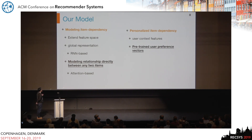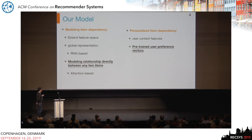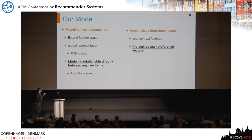For the personalized re-ranking method, there are two problems to solve: first, how to model item dependencies; and second, how to adjust mutual influences between items according to different users. We use an attention-based model to directly model the relationship between any two items, and we use personalized user preference vectors as a conditioning input.